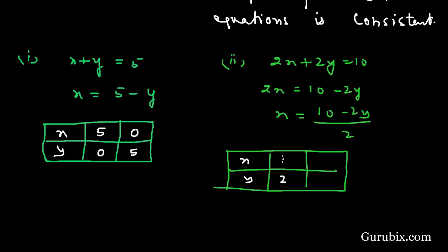If y equals 0, then x equals 5. If y equals 5, then x equals 0. Now we shall plot the points from these two tables on the graph paper.